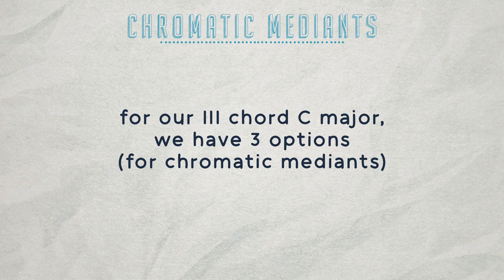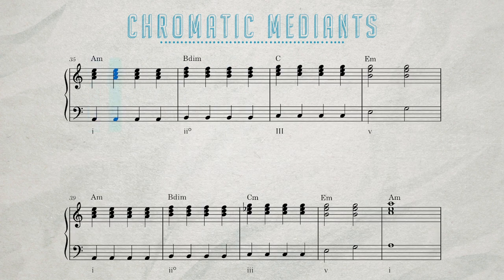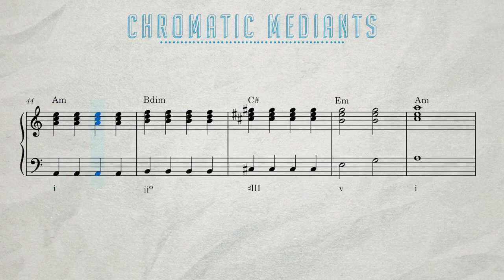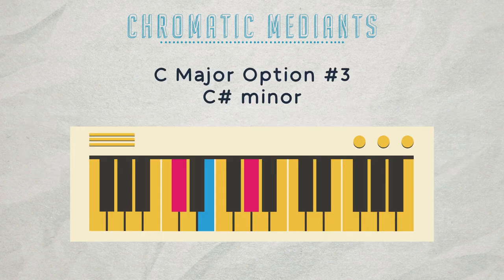For our three chord C major, we have three options. The first is a minor chord, C minor. Here's what that sounds like. Our second option is a sharp three chord, which gives us C sharp major. And finally, our third option is a minor sharp three chord, C sharp minor.